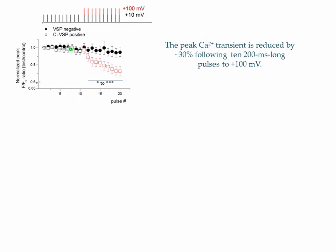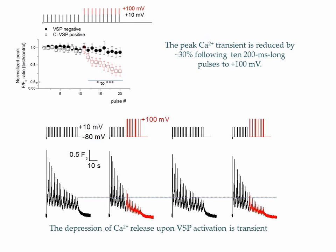This graph presents mean values for the ratio of the relative peak amplitude of the calcium transients during the test protocol to the corresponding relative peak amplitude during the control protocol. In the VSP-negative fibers, this ratio remained close to 1. In the CI-VSP-expressing fibers, the ratio dropped as the large pulses were applied. On average, the peak calcium transient was depressed by about 30% following the large pulses to plus 100 mV. An interesting feature of this effect is that it was transient — we could apply a control, then a test, then control again, then test again, and we would see the effect during the test protocols but recovery in between. This is very consistent with the possibility that the large pulses induced the transient loss of a molecule that promotes calcium release.